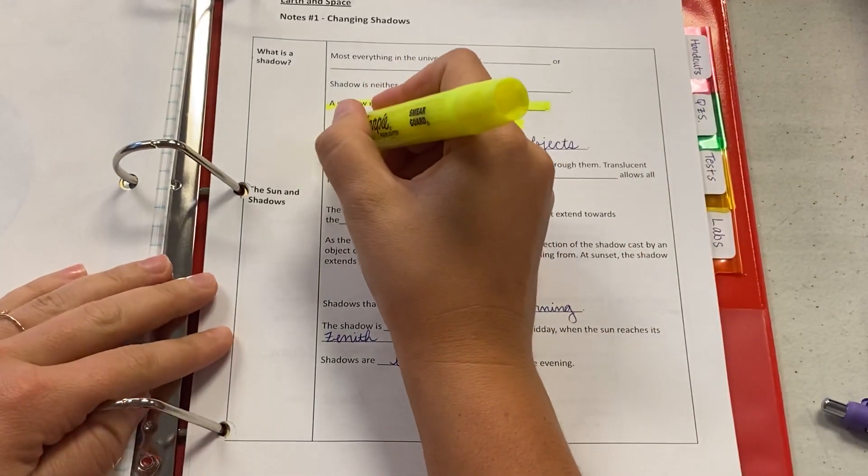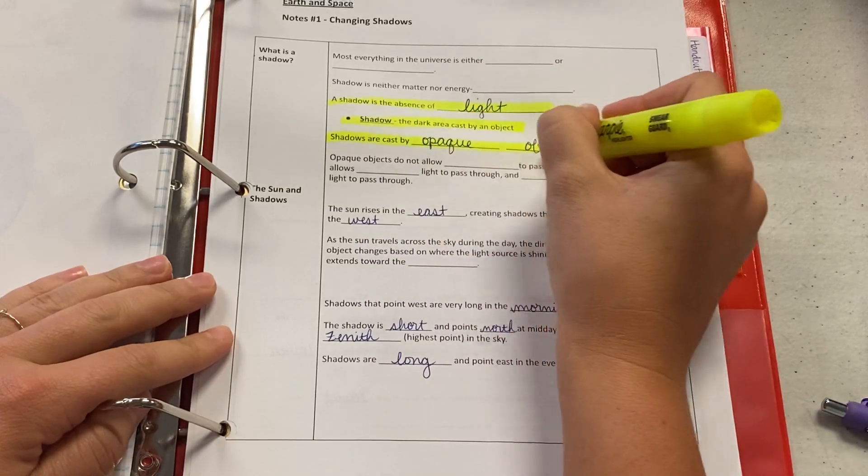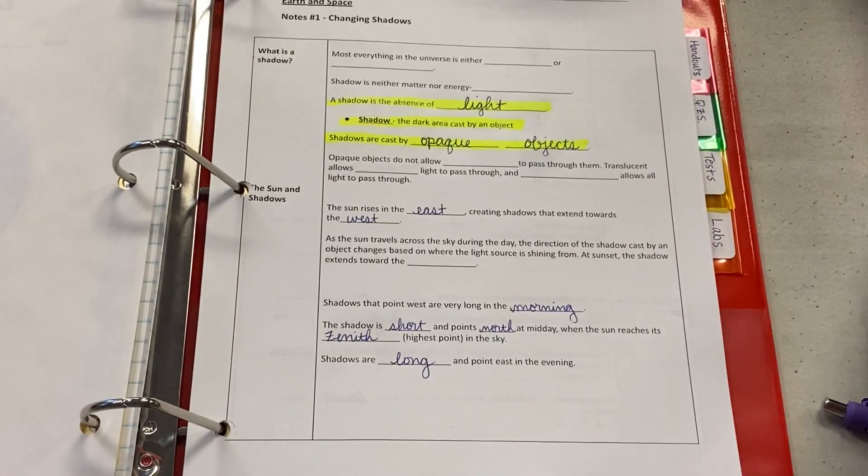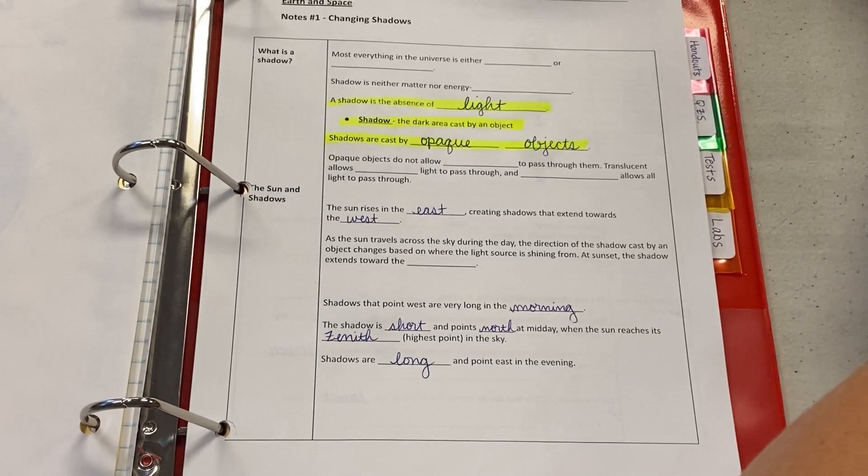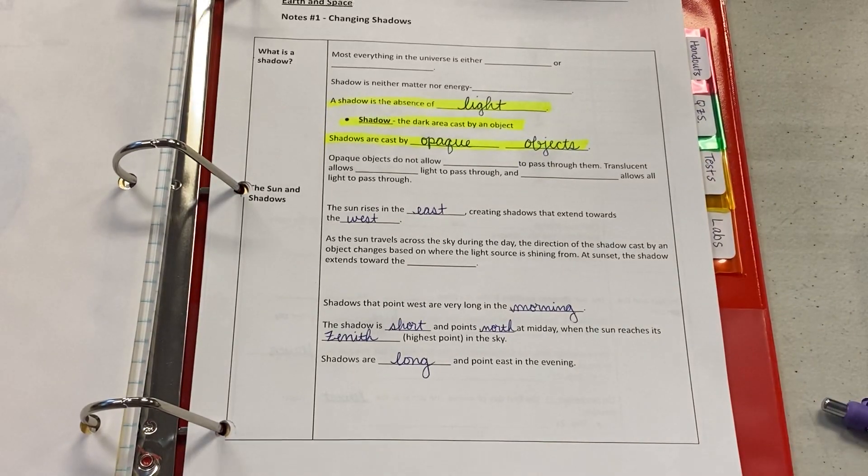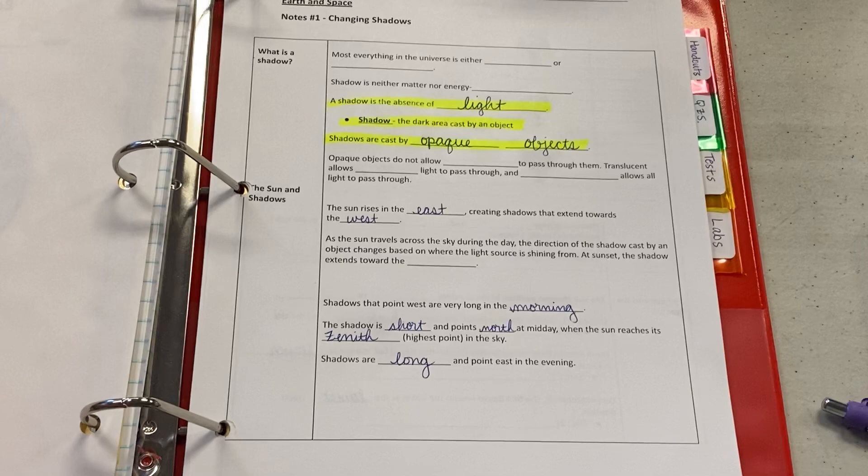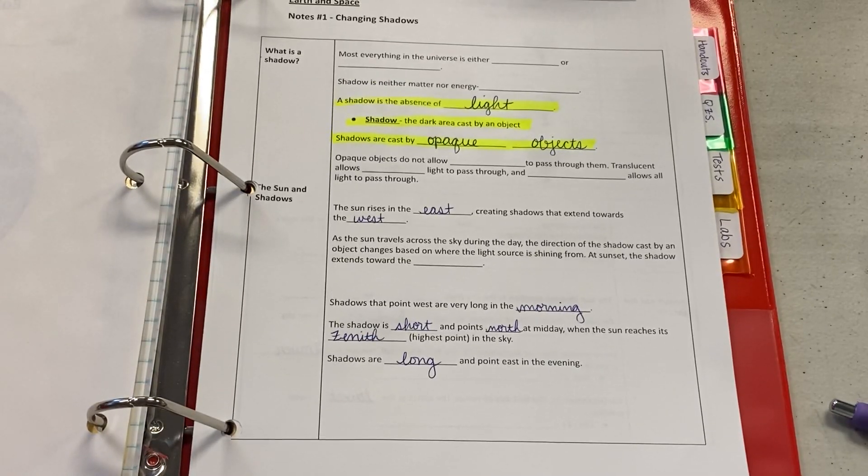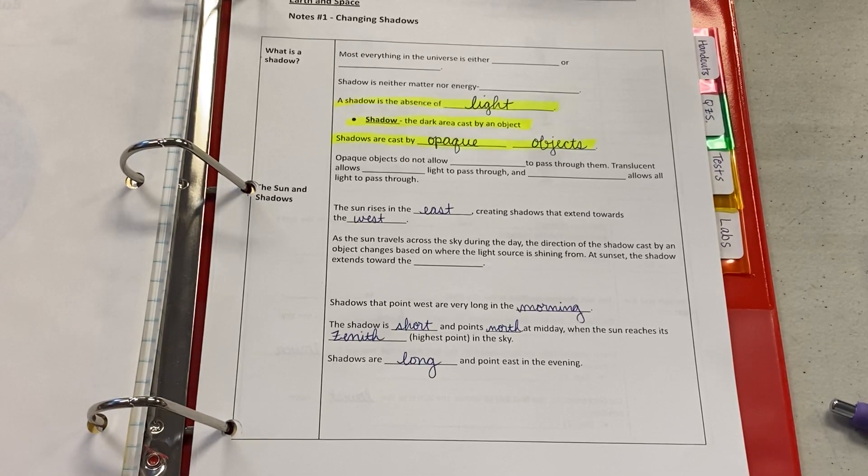You also need to know what kinds of objects create shadows, that it's created by opaque objects, meaning it does not allow any kind of light to pass through. Remember that translucent can sometimes create shadows. They're not as bold of shadows as opaque objects do, and then transparent can as well, but again, they're usually very, very faint.